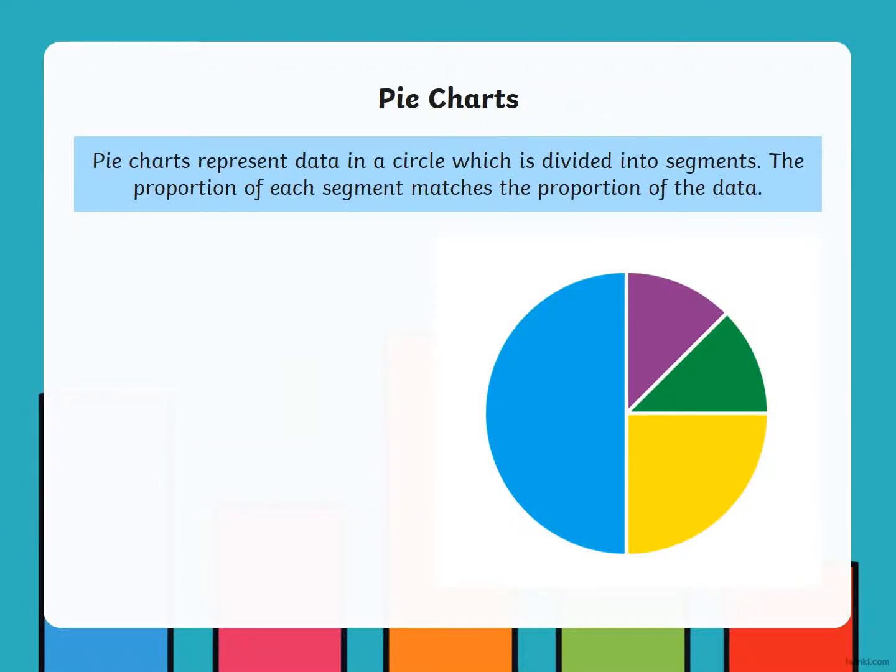Pie charts. Pie charts represent data in a circle which is divided into segments. The proportion of each segment matches the proportion of the data.